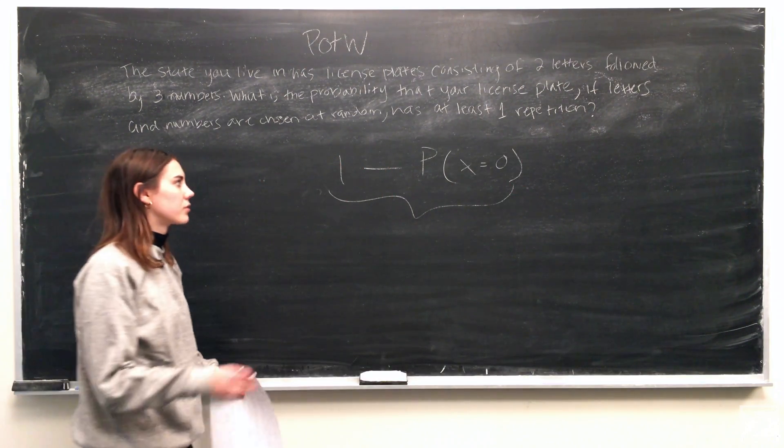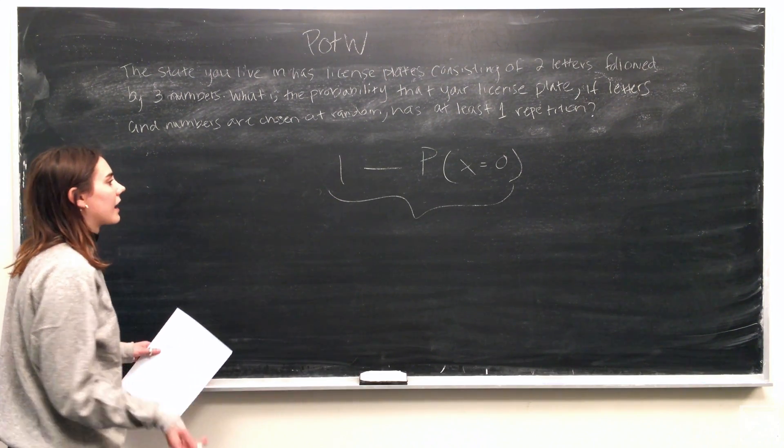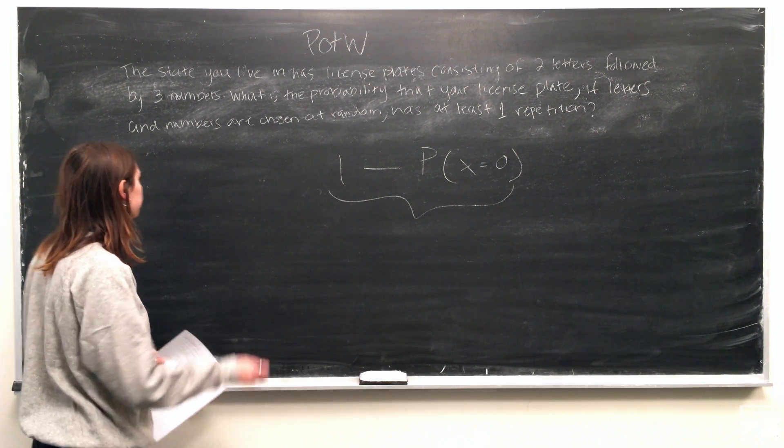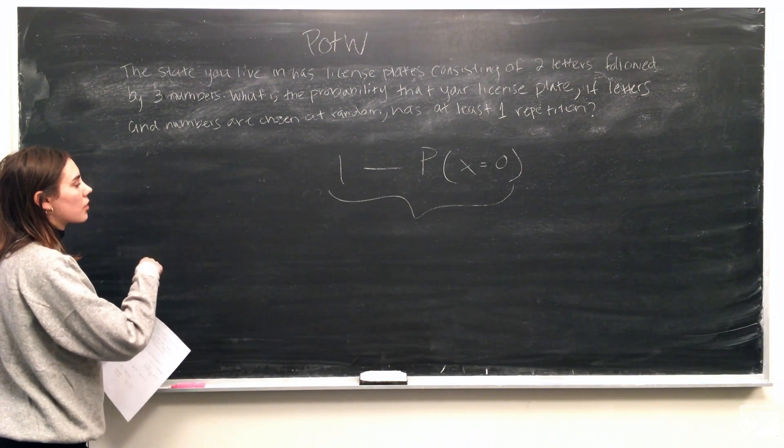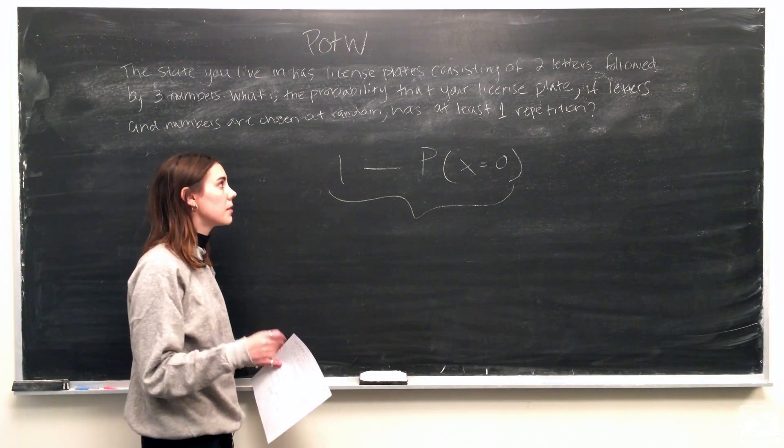So we can just solve for the probability of having zero repetitions by looking at the different choices and possibilities for the license plate. In terms of the total combinations that you can have for the license plate number, you'll notice there's two letters followed by three numbers.